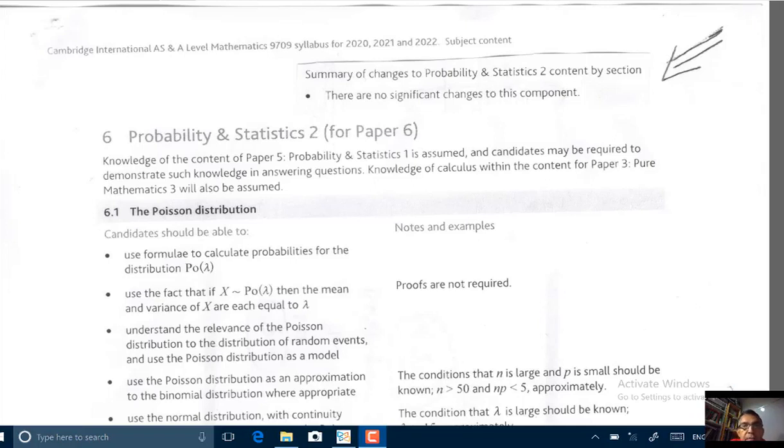Hi. In this video, we want to talk about the syllabus for Probability and Statistics 2, Paper 6, of the CIE exams, AS and A-level mathematics, subject code 9709, syllabus for 2020 onwards.